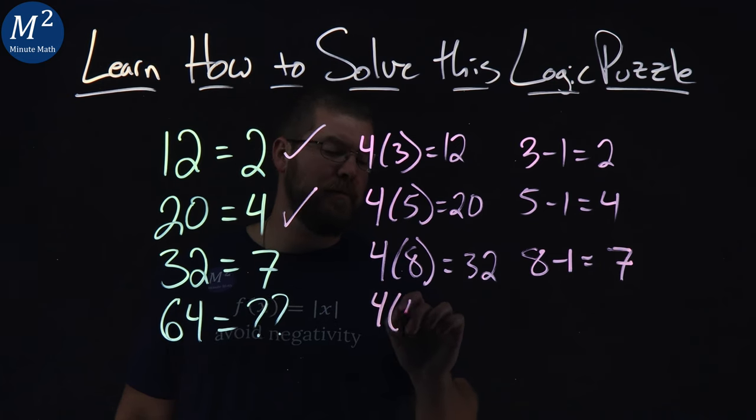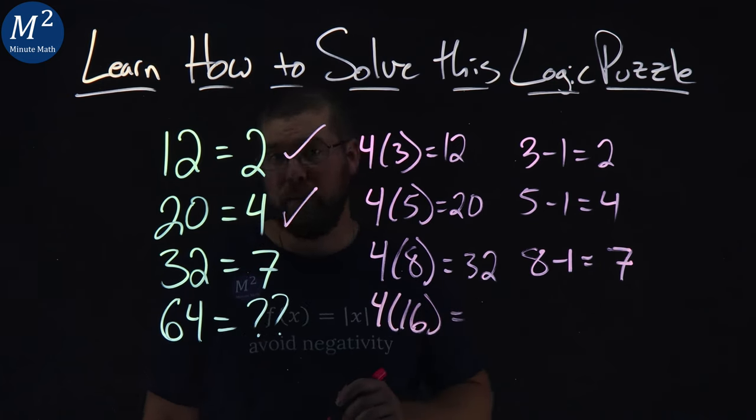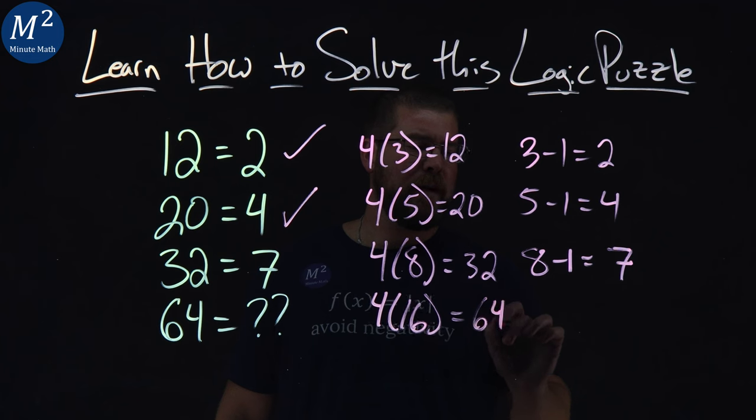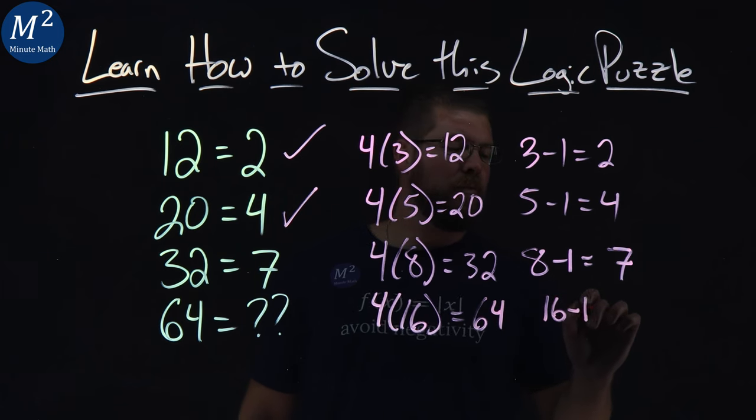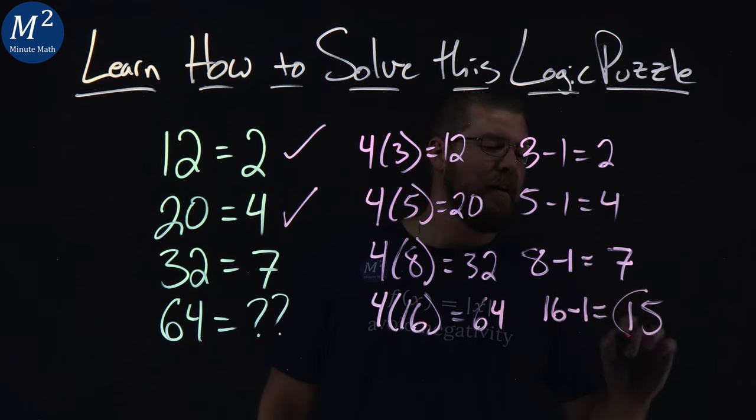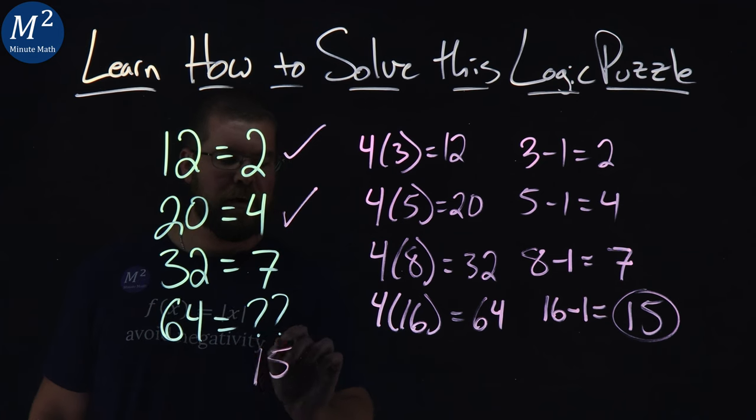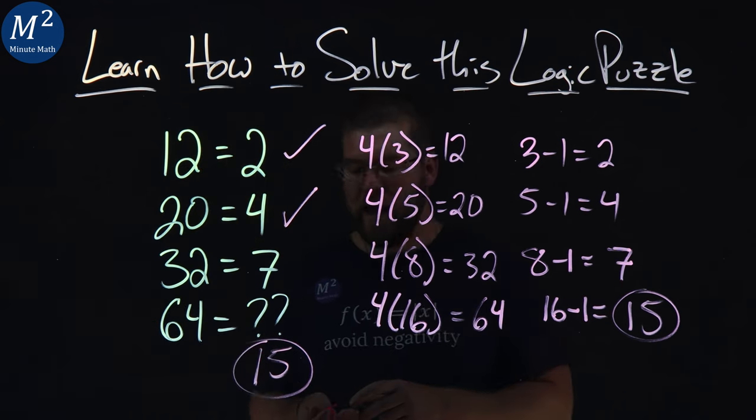So 64 is 4 times 16. If this is, in fact, the pattern, we get that 64. So 16 minus 1 is 15. And that is the number we're looking for here, and that is the method I came up with for the solution.